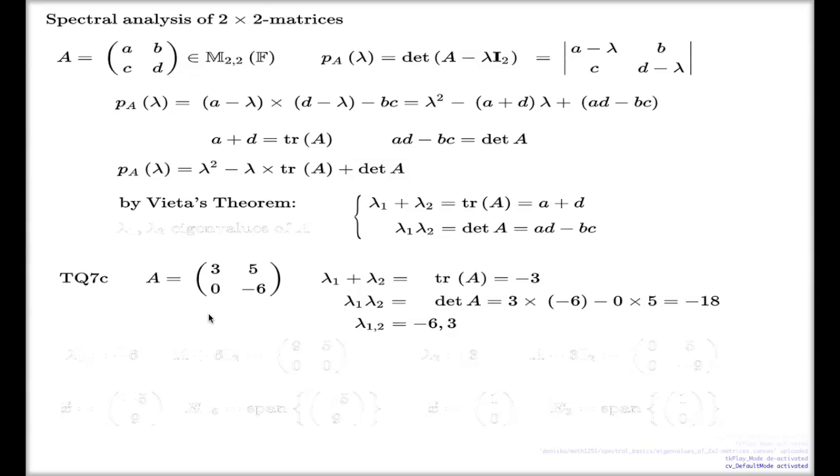And now I can finish my spectral analysis. For the first value -6, the matrix A + 6I is here. It's 9, 5, 0, 0 and the associated eigenvector will be the vector which vanishes such a matrix. We can guess that vector straight away. Here's the guess for the vector: -5, 9. And so the associated eigensubspace is the span of this -5, 9.